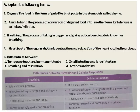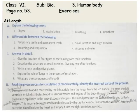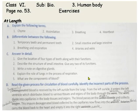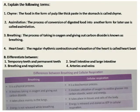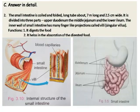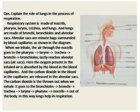The next question — question number 4: explain the role of lungs in the process of respiration. The respiratory system is made up of nostrils, pharynx, larynx, trachea, and lungs. Lungs are made of bronchi, bronchioles, and alveolar sacs.